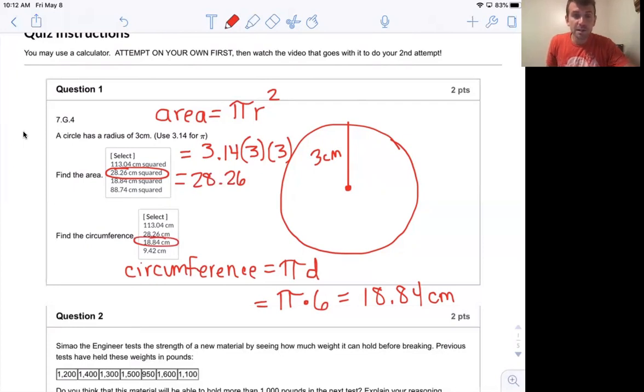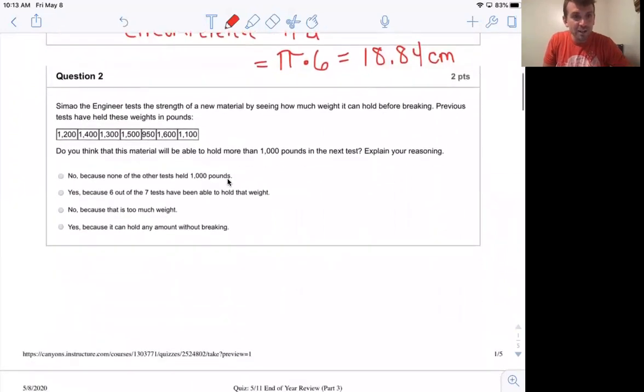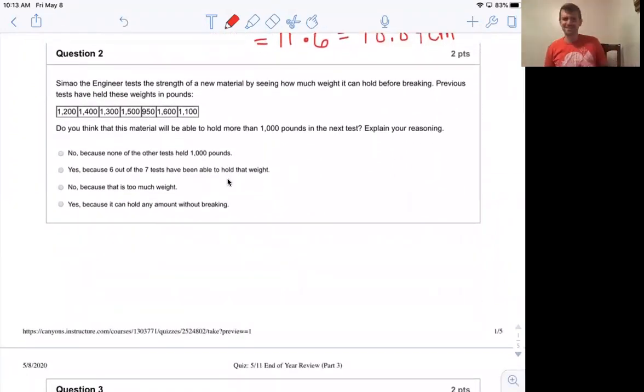Double checking to make sure I'm right before moving on. Hope you guys are having an awesome day. Question two, Seemao the engineer. Congratulations on the career change. Test the strength of a new material by seeing how much weight it can hold before breaking. Previous tests have held these weights in pounds. So it looks like Seemao has had an experiment seven different times. We have seven different pounds or weights that the material held before breaking. So those are the seven experiments, what we call them in statistics and probability.